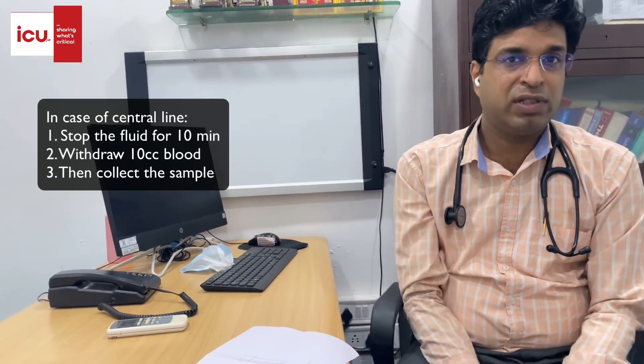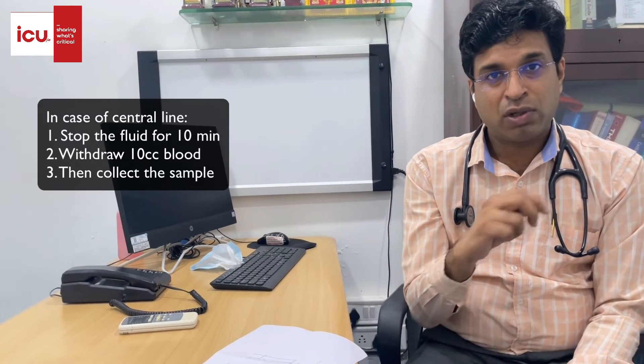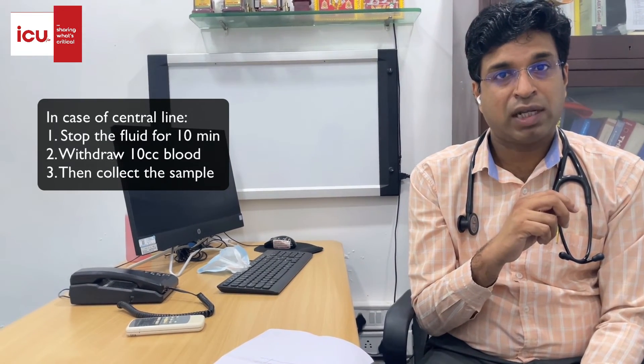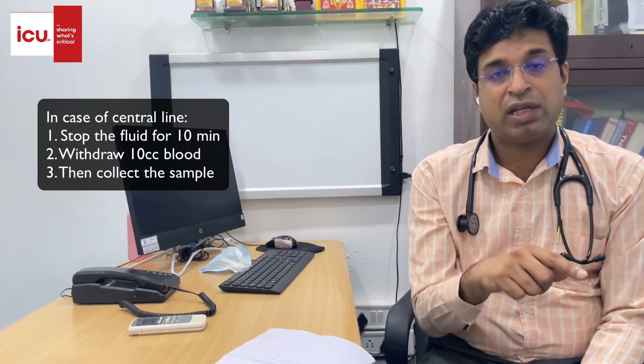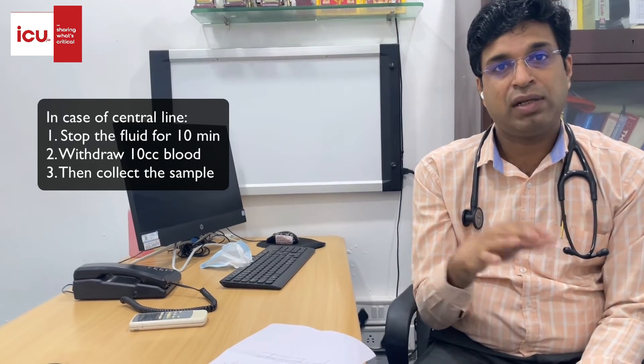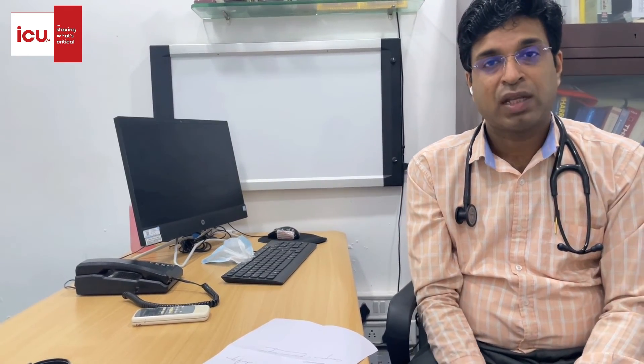Stop the fluid for 10 to 15 minutes, then withdraw the sample. If a central line is in place and you need to take the sample from it, you should make sure you have withdrawn blood before taking the actual sample. The amount of blood withdrawn should be three times the dead space of the central line, which usually turns out to be 10 cc or 15 cc. Withdraw 10 cc of blood from the central line, set it aside, take a new syringe to collect the actual sample, and then you can push the 10 cc back.